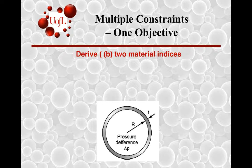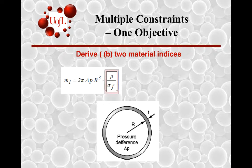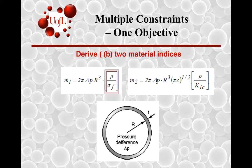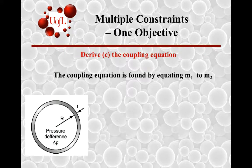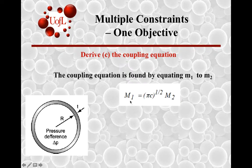To derive the material indices, we set the two masses obtained by the two constraints equal to each other. So M1 has a material index of rho over sigma f, and M2 has a material index of rho over K_IC. The coupling equation is found by equating M1 and M2. And so then you have capital M1 and capital M2 replacing small m1 and small m2. And if you take logarithms on either side, you can obtain the coupling constant, which is basically in this case the square root of pi c.